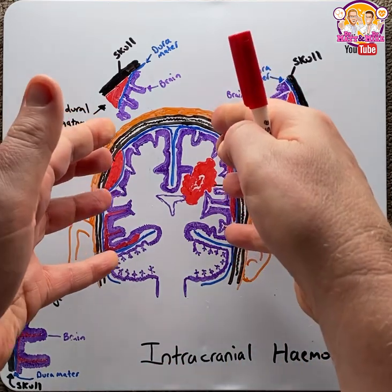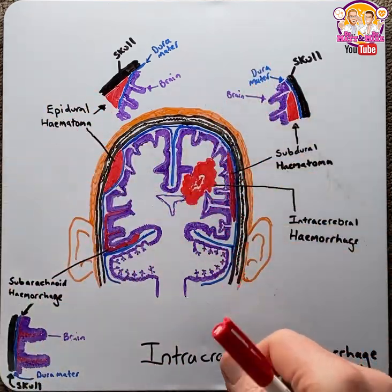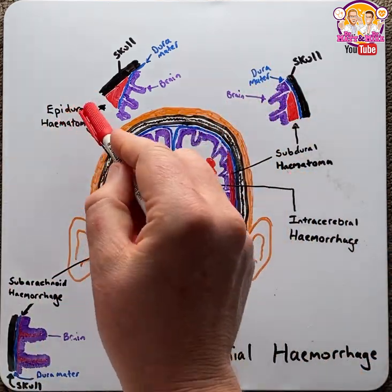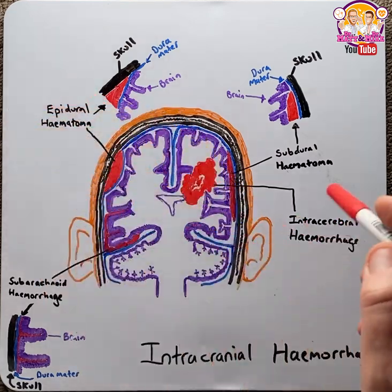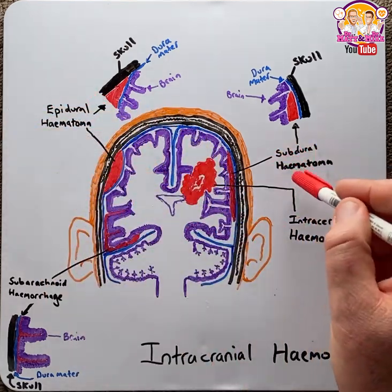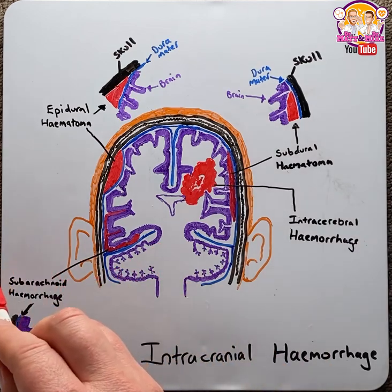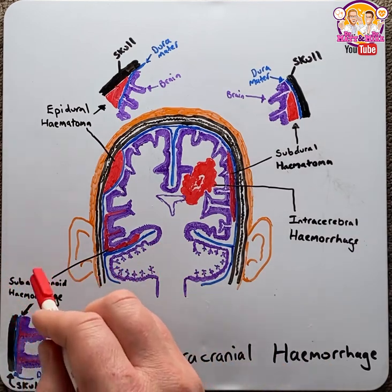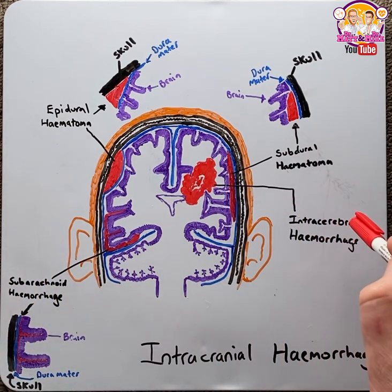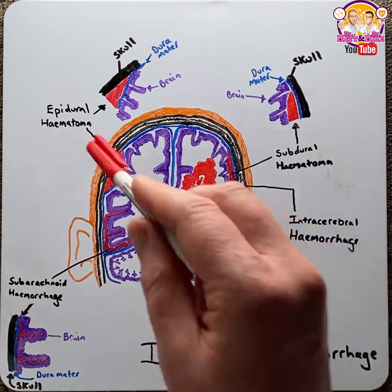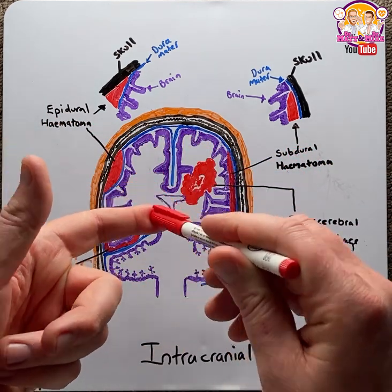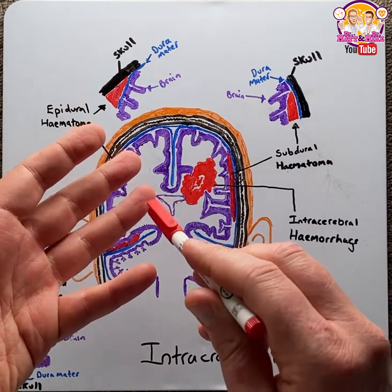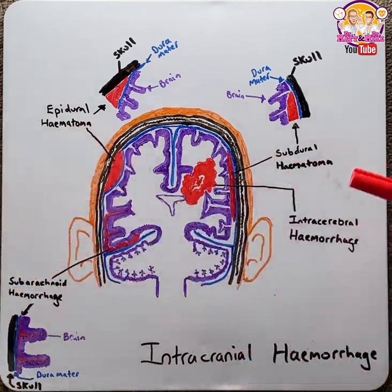Intracranial hemorrhages, or bleeding within the skull, encompasses four main types: number one, epidural or extra-dural hematomas; number two, subdural hematomas; number three, subarachnoid hemorrhages; and number four, intracerebral or intra-parenchymal hemorrhages. For each of these four types, we'll look at their common causes, the pathophysiology, and how they commonly present with their signs and symptoms.